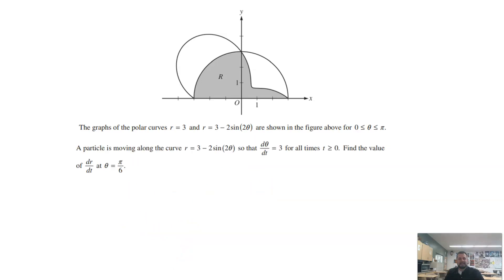Now, letter D wants us to, we've got this same 3 minus 2 sine of 2 theta. So it's just that of this first function that we're talking about right there. It tells us that d theta dt is equal to 3 for all times. If I were to take the derivative of r, you'll notice what it wants is dr dt. If I were to take the derivative of r here, what I would get is dr d theta. So if I were to take the derivative and plug in pi six, that would give me dr d theta, which is not what I'm looking for. I'm looking for dr dt. But I also know that d theta dt right there is 3 at all times. And so the d thetas in this case would cancel out and I'd be left with dr dt. So all I have to do really is find dr d theta and plug in pi over 6.